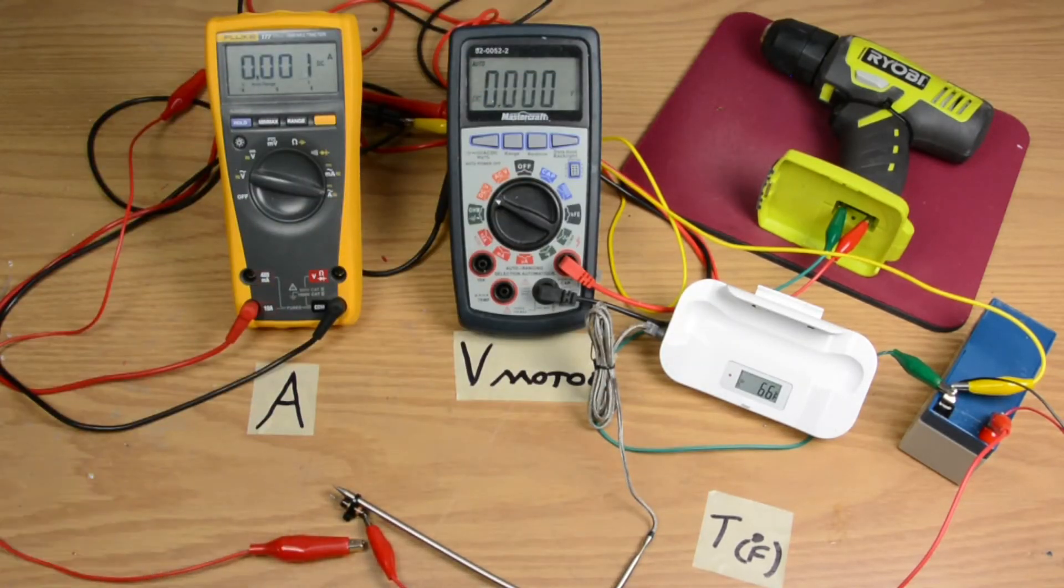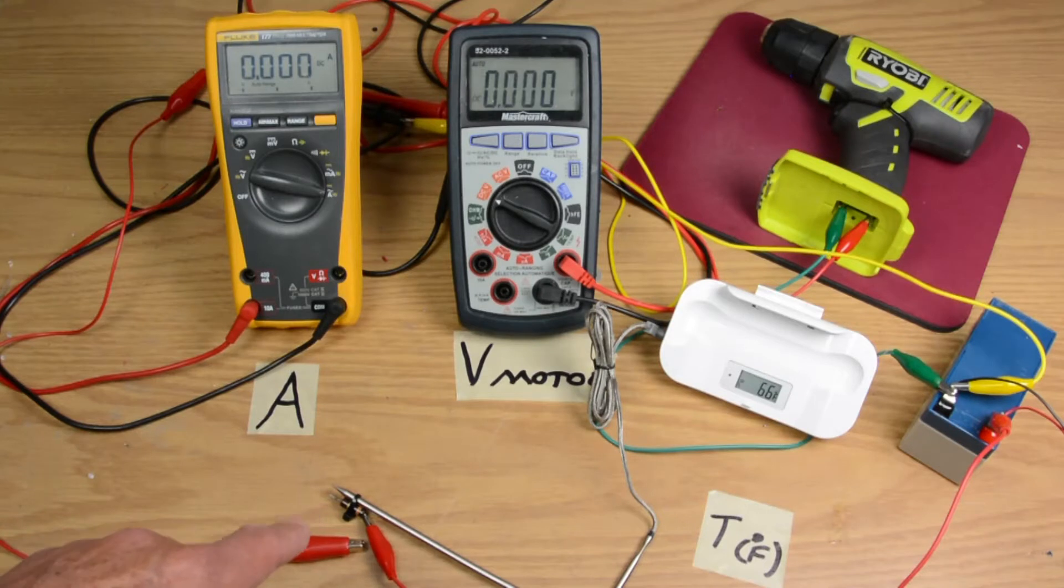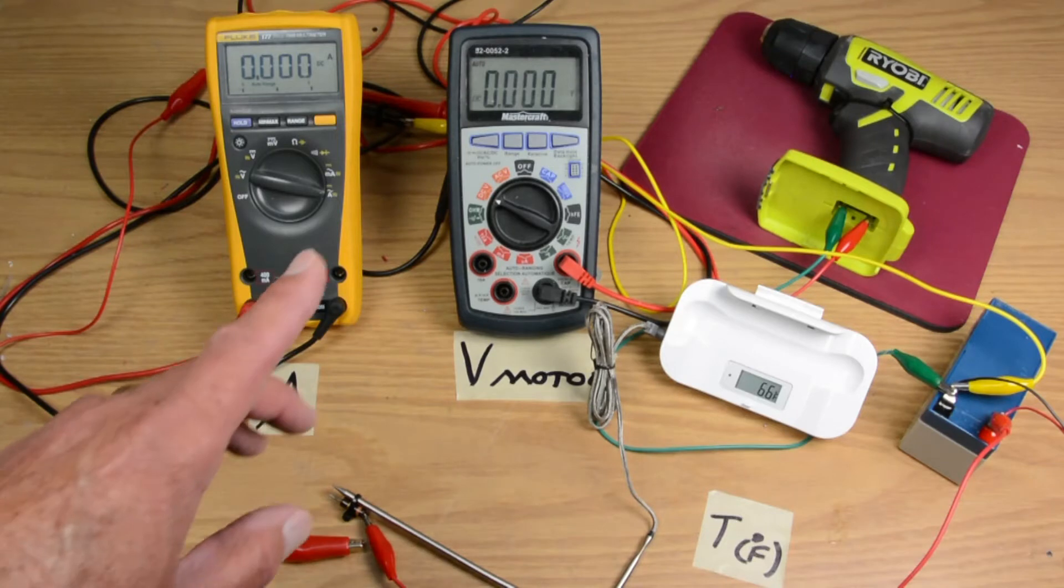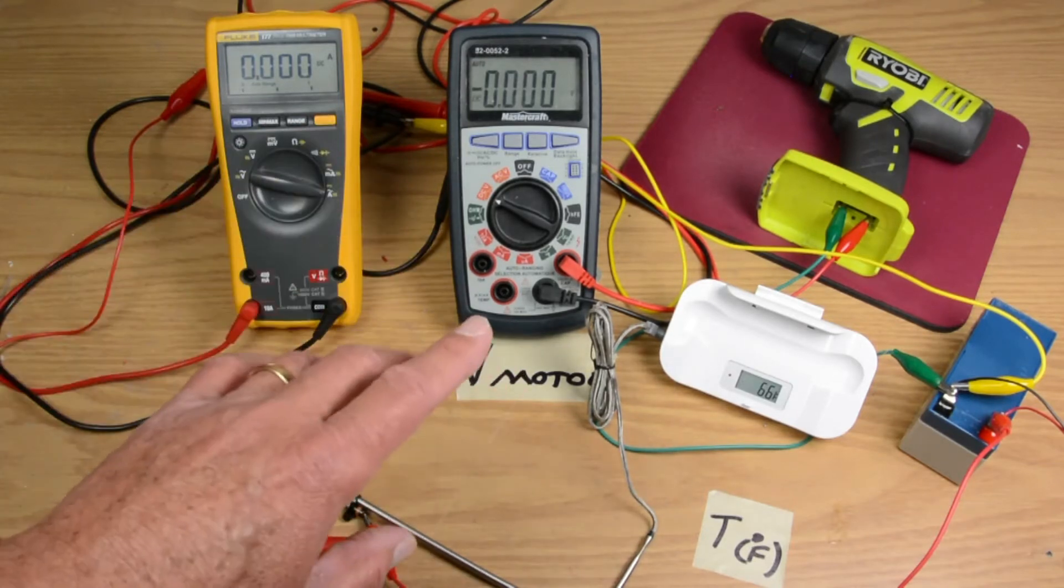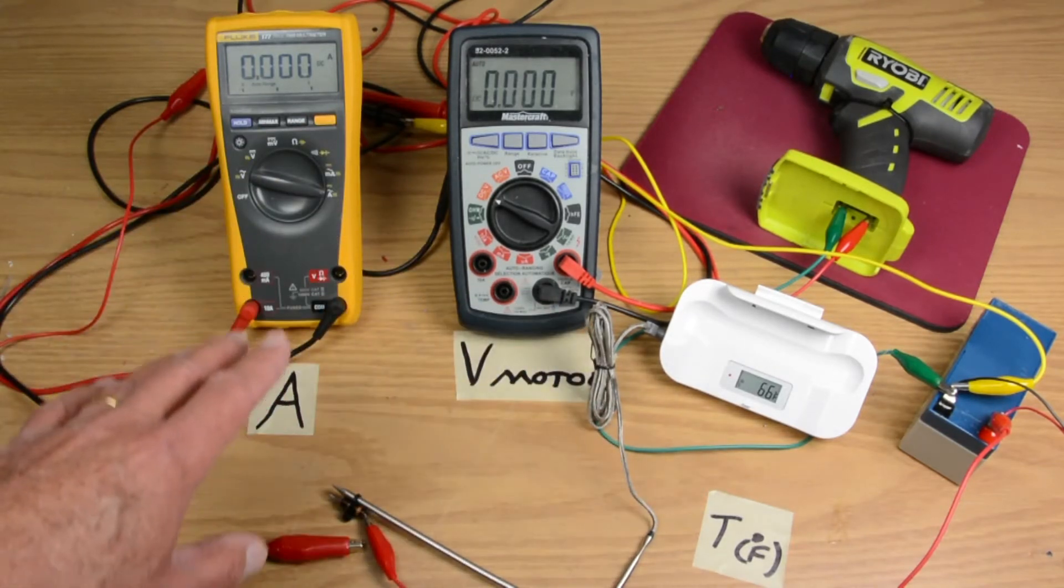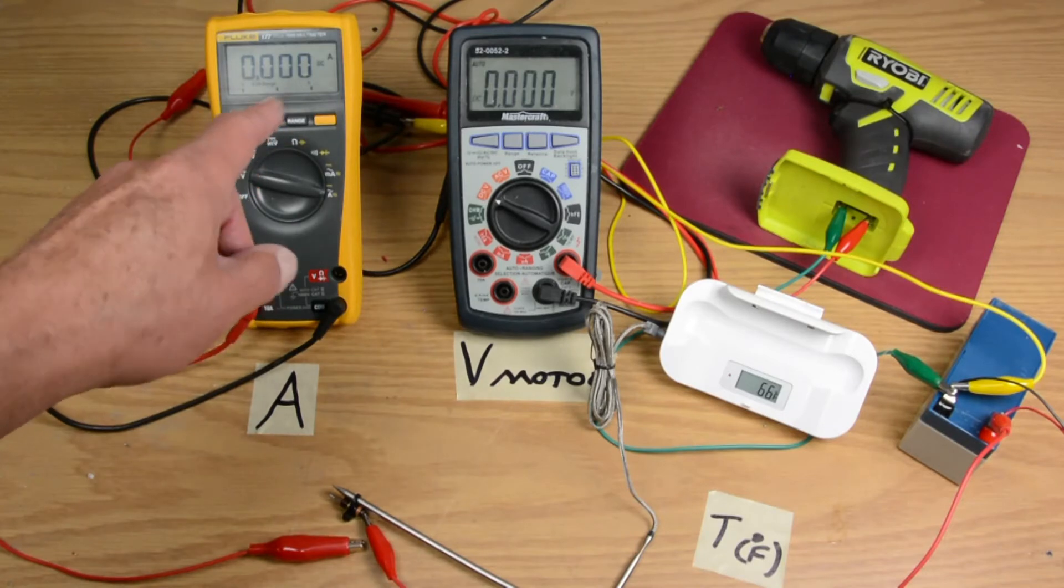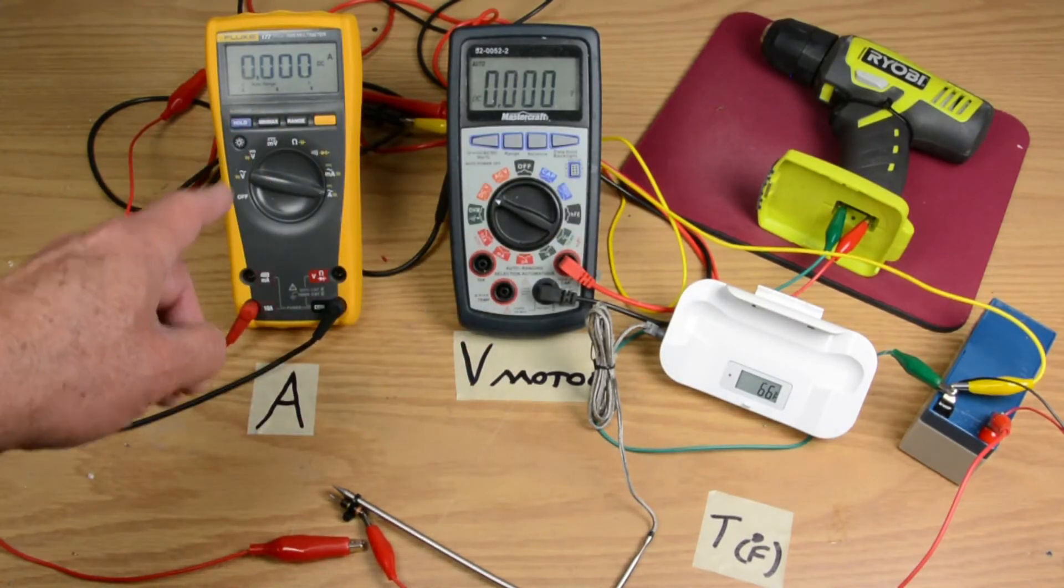So to put this all in perspective, 1 ohm is a very small resistance. It's actually about as small a resistor as you can usually buy at most electronics stores. And we've tried to keep everything reasonably sort of simple here. And what I mean by that is we've tried to set up the drill so that it draws about 1 amp.